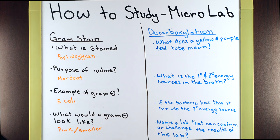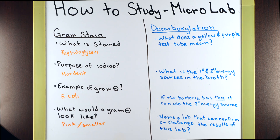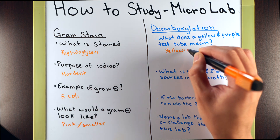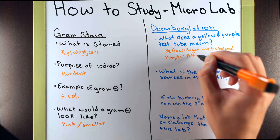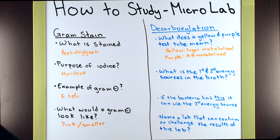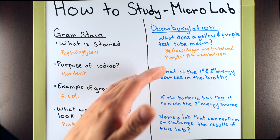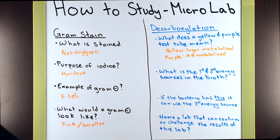Now let's get into some harder questions in the form of our decarboxylation lab. The first question: what does a yellow and purple test tube mean? Meaning that we've already inoculated our bacteria — what do the two possible results mean? We're going to want to say that yellow means that the sugar was metabolized, while a purple test tube means that the amino acid in addition to the sugar was also metabolized. You could also elaborate and say that yellow would give you acid end products, and a purple test tube means that you have alkaline end products, because when you break down sugars it creates acids, and when you break down proteins it creates alkaline end products.